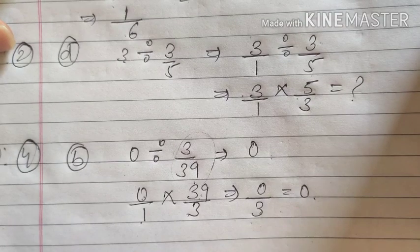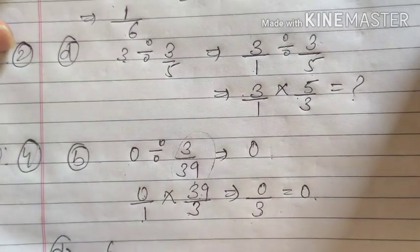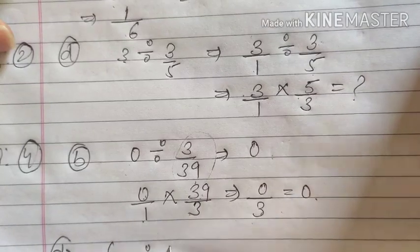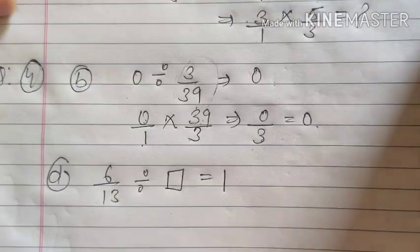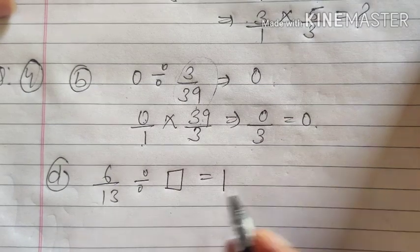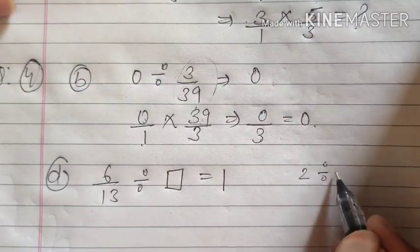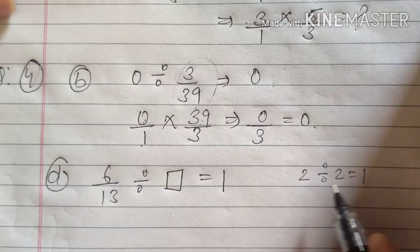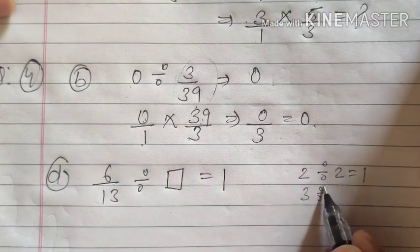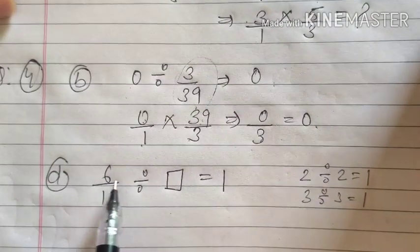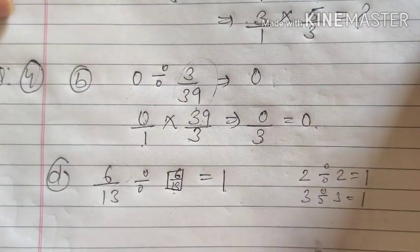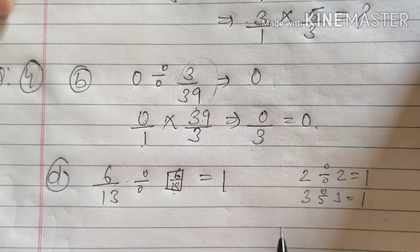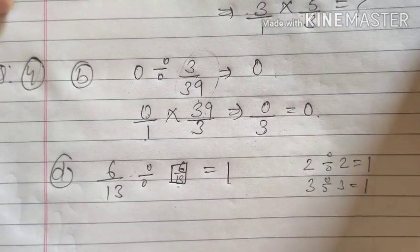Similarly, here some questions are there. For example, D. That is 6 upon 13 divided by dash is equal to 1. That we know. That means, we know that when 2 will be divided by 2, then only we will get 1. When 3 will be divided by 3, then only we will get 1. So, 6 upon 13, when it will be divided by 6 upon 13, then you will get 1. Similarly, you will do rest of the parts of question number 4.